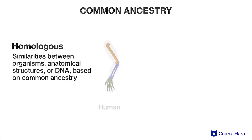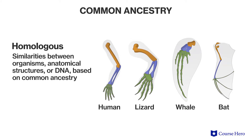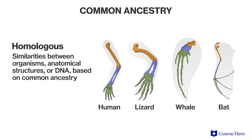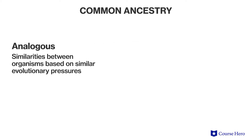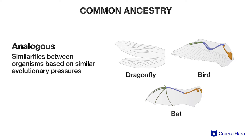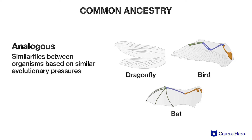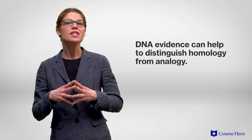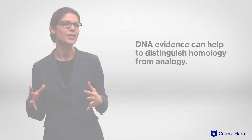It can be challenging to determine whether the similarities displayed by organisms are due to shared ancestry — these similarities are called homologies — or due to organisms being subjected to a similar evolutionary pressure — these similarities are called analogies. DNA evidence can help to distinguish homology from analogy.